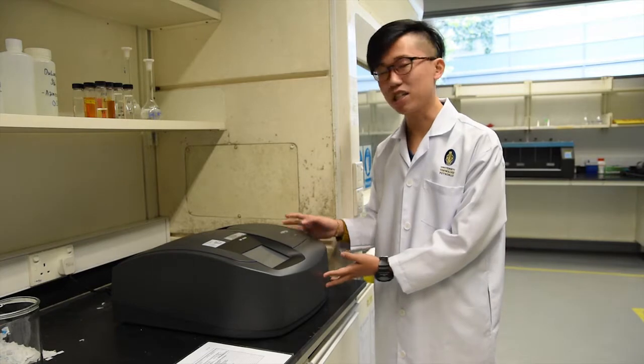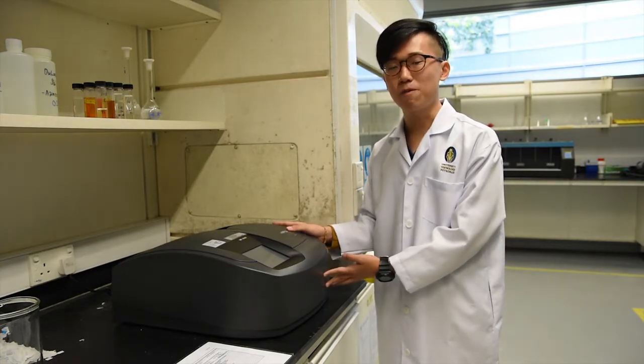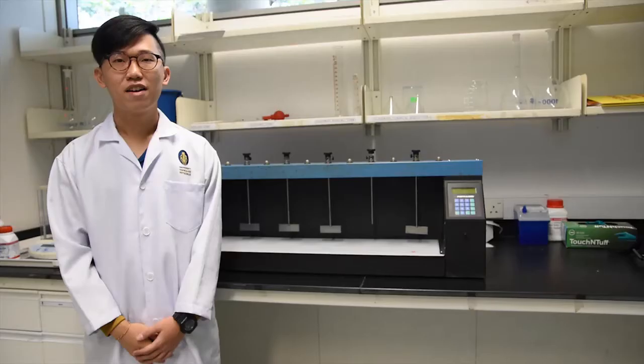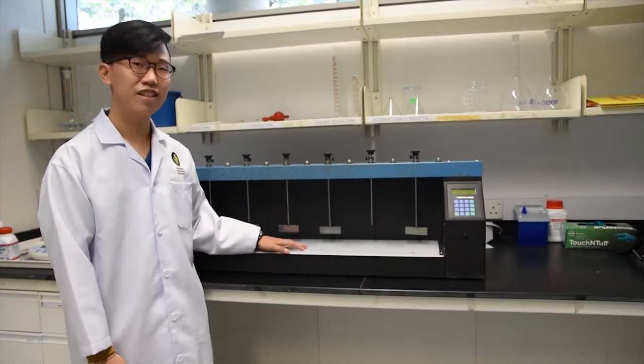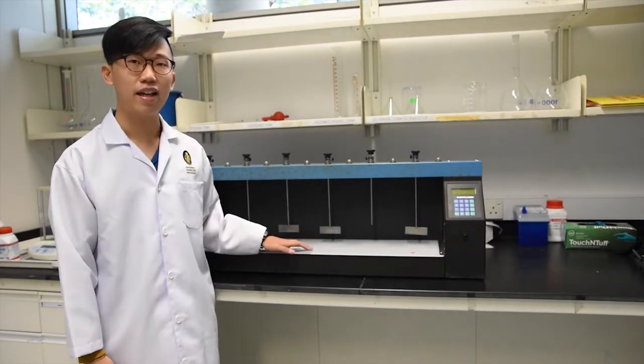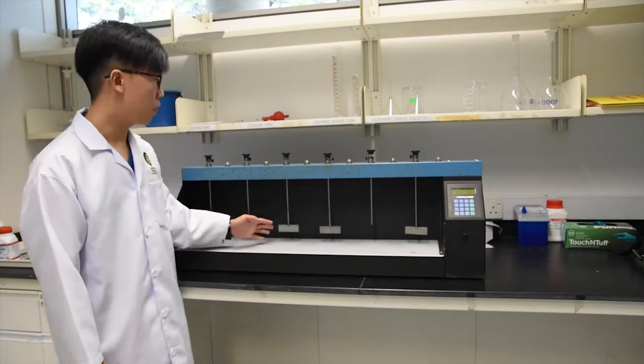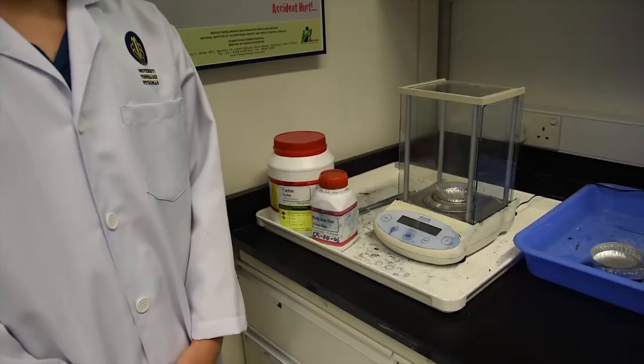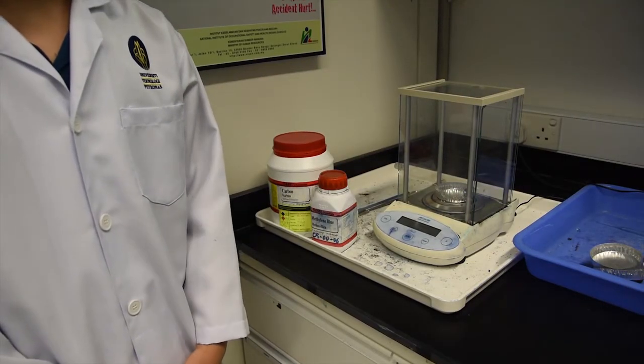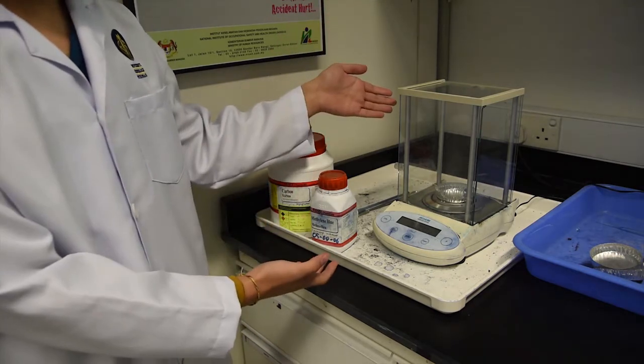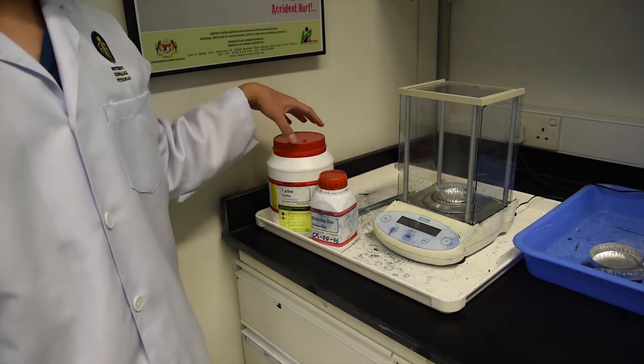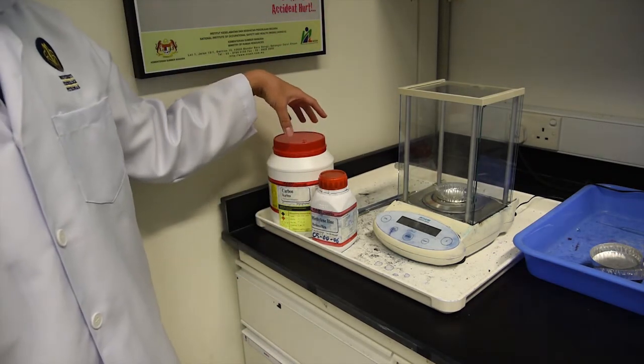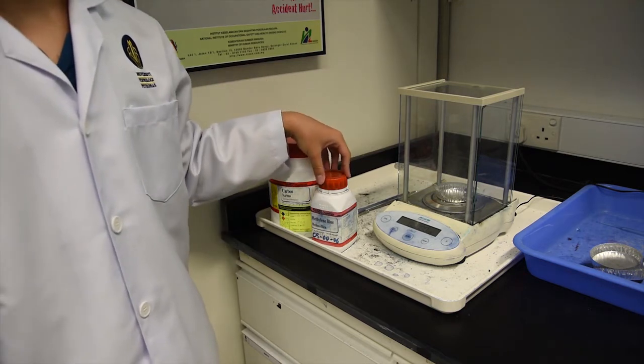First would be the spectrophotometer which measures absorbance. Next, we've been using the stirrer machine which allows us to set our revolutions per minute. And for the last equipment, we'll be using the electronic weighing balance to measure the activated carbon and the methylene blue.